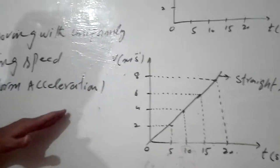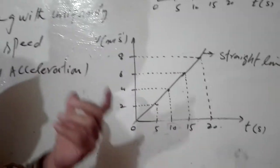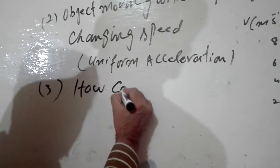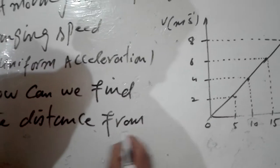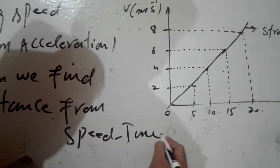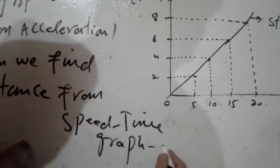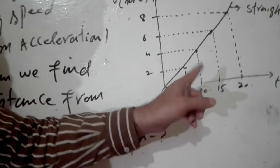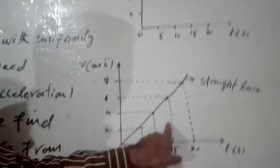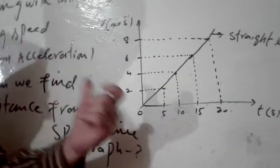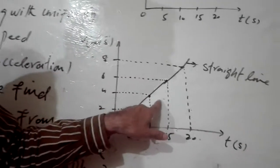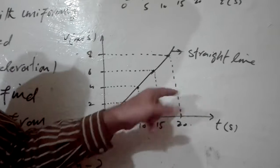I think the concept is clear. The next important topic is: how we can find the distance from the speed-time graph. Whenever you have to find the distance from the speed-time graph, always find the area under the curve. The area under the speed-time graph gives you the distance covered by the body.